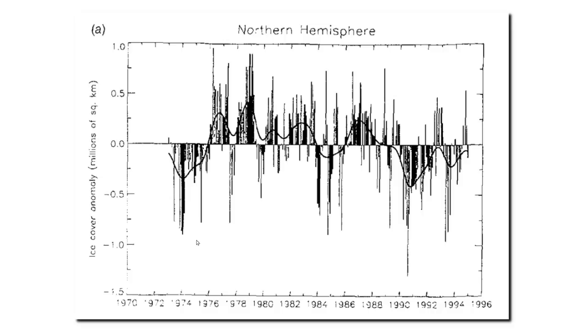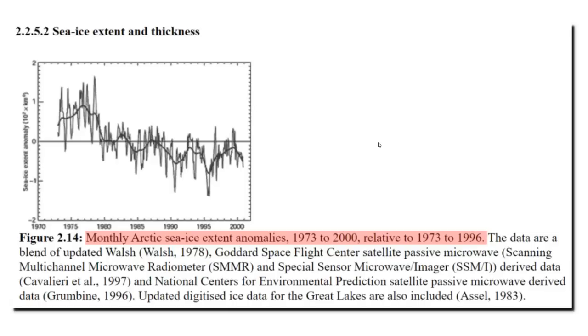This graph is from the 1995 United Nations report and it shows exactly the same thing. But in their 2001 report, the United Nations massively altered the Arctic sea ice data.